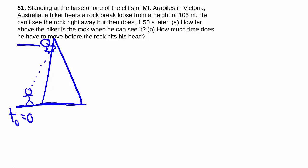We'll call this height where the hiker is, ignoring his height just to make it simple, call that y equals zero, positive upwards. And here the rock is initially at 105 meters up above our y equals zero, but he can't see it right away.